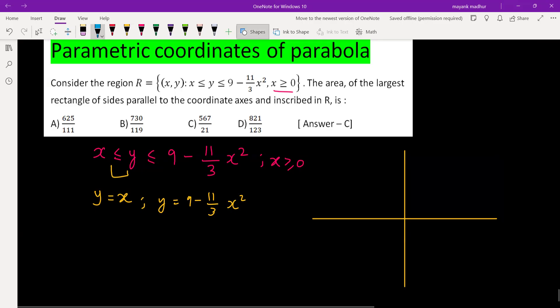So let's construct these two curves. y equal to x will be a line which is passing through the origin and having slope 1 like this. The second one is y equal to 9 minus 11 by 3 x square. So when you're putting x equal to 0 you'll get y equal to 9. So it is a downward parabola having vertex 0 comma 9, something like this.